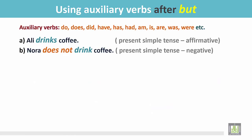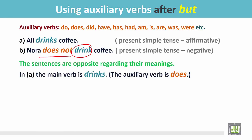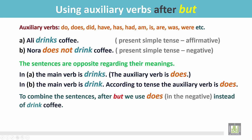There are two other examples. 'Ali drinks coffee' — this is affirmative in the present simple. 'Nora does not drink coffee' — this is negative in the present simple tense. It has the auxiliary verb 'does' in the negative form and the main verb is 'drink'. In sentence A the main verb is 'drinks' and the auxiliary verb is 'does'. In sentence B the main verb is 'drink', and the auxiliary verb is also 'does'. To combine these two sentences after 'but', we use 'does not' in the negative form instead of 'drink coffee'.